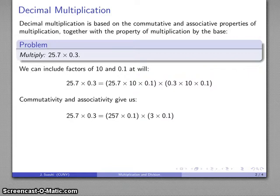Commutativity and associativity allows me to rewrite this product this way. 25.7 times 10 is 257. 0.3 times 10 is 3. And then the 0.1 stays along.